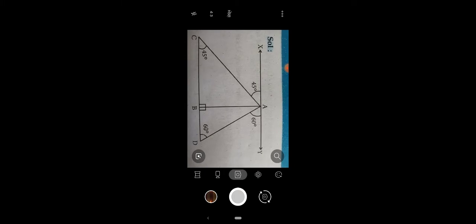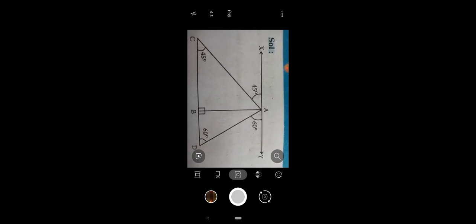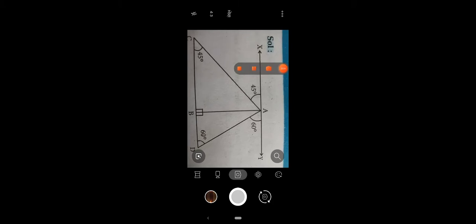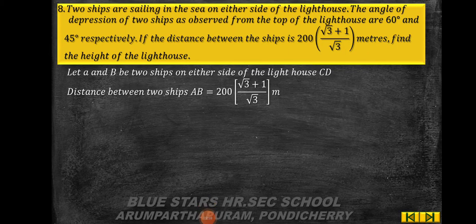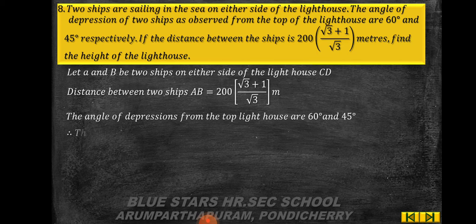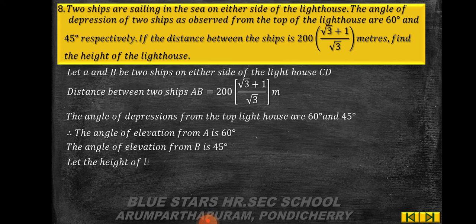Let A and B be the two ships on either side of lighthouse CD. AB = 200(√3 + 1)/√3 meters. The angles of elevation from the top of the lighthouse are 60° and 45° — that is, the angle from A is 60° and from B is 45°. By alternate angles, the angles of depression are also 60° and 45°. Let the height CD = h meters.